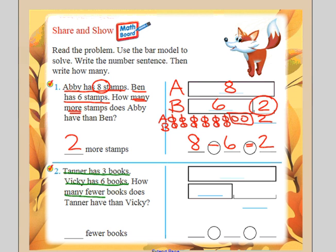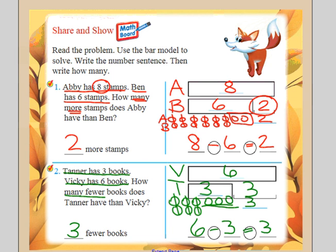This one's tricky because I see the bigger box. I have to make sure that I put the bigger number here. And this time it's Vicki. So I'm going to put V for Vicki and give her the 6. Then Tanner has 3 books. So I know if I draw a picture comparison how many fewer Tanner has by lining up the ones they have that are the same and seeing what's left over. So I know the leftover number is 3. So there are 3 fewer books. So 6 minus 3 equals 3. 3 fewer books.